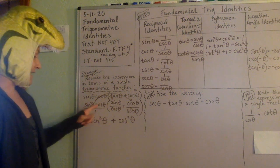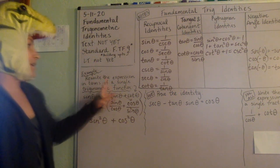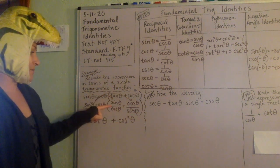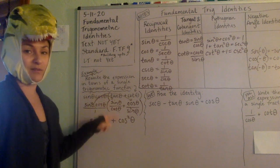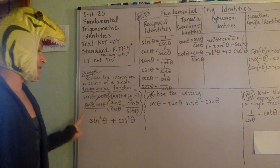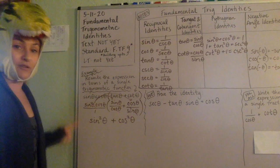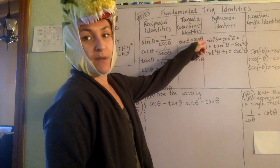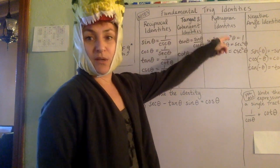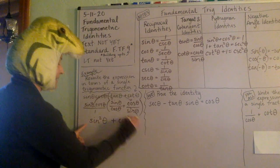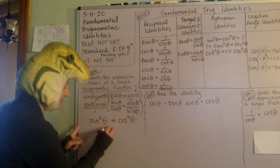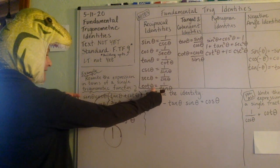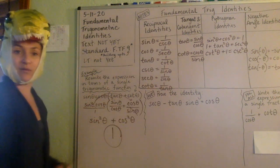To recap: we used identities to make substitutions, then did a little distribution. Now look at the Pythagorean identities — we have sine squared plus cosine squared, and that equals one. So we can replace the entire expression with one. That's our final answer — this whole big expression is actually just equivalent to one.